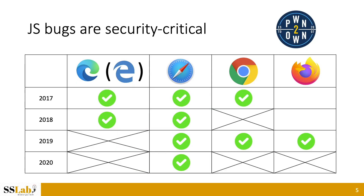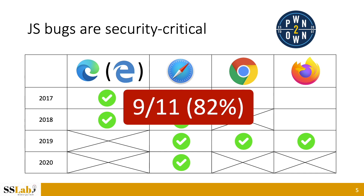To show another indicator of the severity of JavaScript bugs, we collected the last four years of Pwn2Own results, which is the top industry hacking competition against major commercial software including web browsers. Among the 11 successful attempts to hack the four major browsers — Edge, Safari, Chrome, and Firefox — nine bugs utilized JavaScript vulnerabilities to achieve remote code execution.